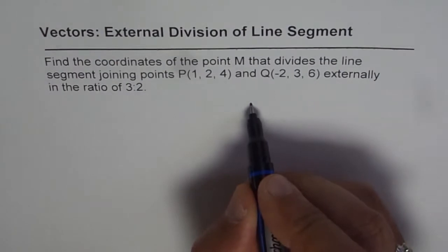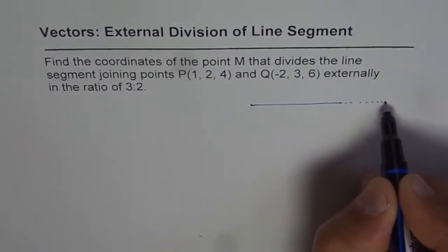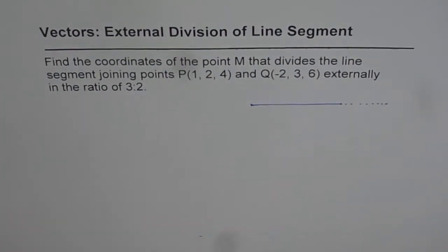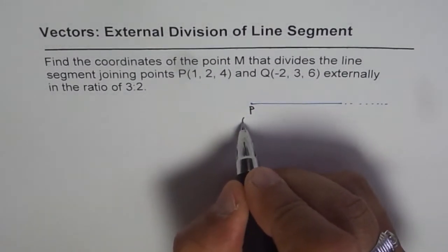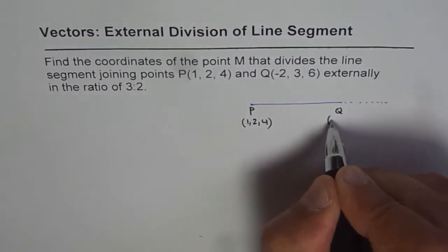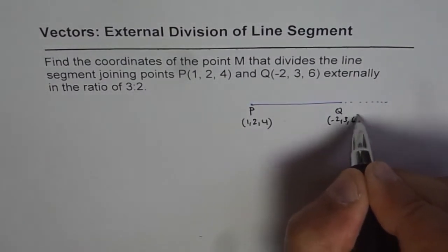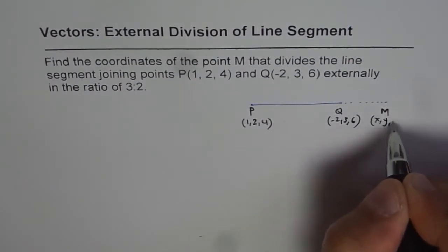This means we have a line segment PQ divided by a point outside the line. That is external division of a line segment. Point P is (1, 2, 4), point Q is (-2, 3, 6), and point M has coordinates (x, y, z).